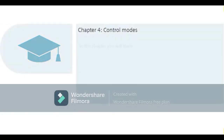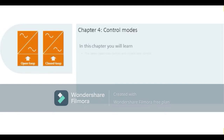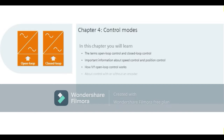In this chapter you will learn more about the terms open-loop control and closed-loop control, and will be provided with important information on speed control and position control. You will also learn how voltage-by-frequency open-loop control works and how control with an encoder differs from control without one.